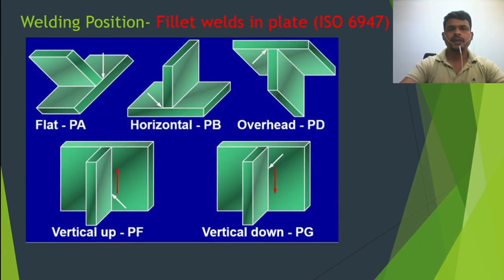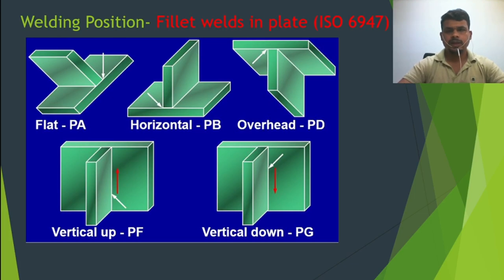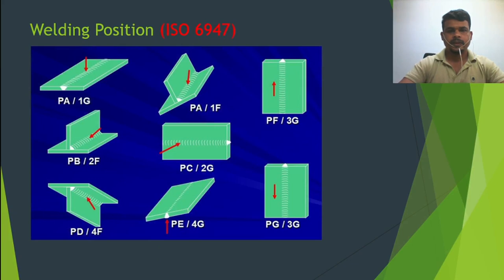Now fillet weld in plate. Similar to butt weld: flat, then horizontal, overhead, vertical up PF, and vertical down PG. The next slide is the same as the previous, but includes 1G, 1F, 3G, and 2G position codes together. I hope you understand — just a typical example to show the positions.